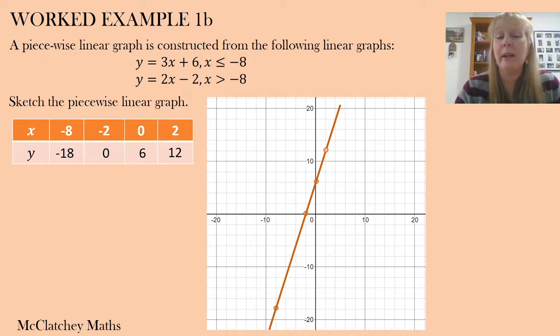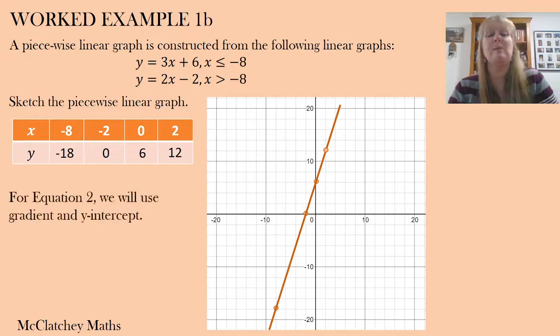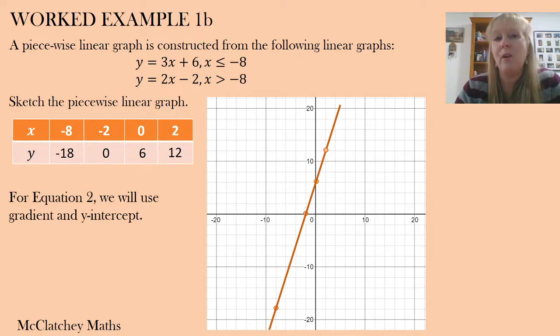Now it's time to plot our second equation. I'm going to use for this one the gradient and y-intercept method. So firstly, let's inspect our equation. Here is our y-intercept. I've circled that. It's negative 2. So this is where we cut the y-axis. So I'm going to plot that point in red on the y-axis.